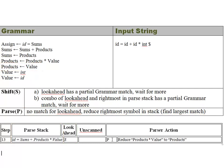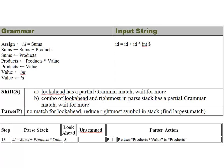In step thirteen it gets more interesting. The look-ahead is exhausted, so no more shifting. Looking at the parse stack, I try to fit the most. I have products times value — both present in the grammar and in the parse stack — so I reduce that whole sequence to products. Then we have sums plus products, which also matches a grammar production, so I reduce that all the way down to sums.